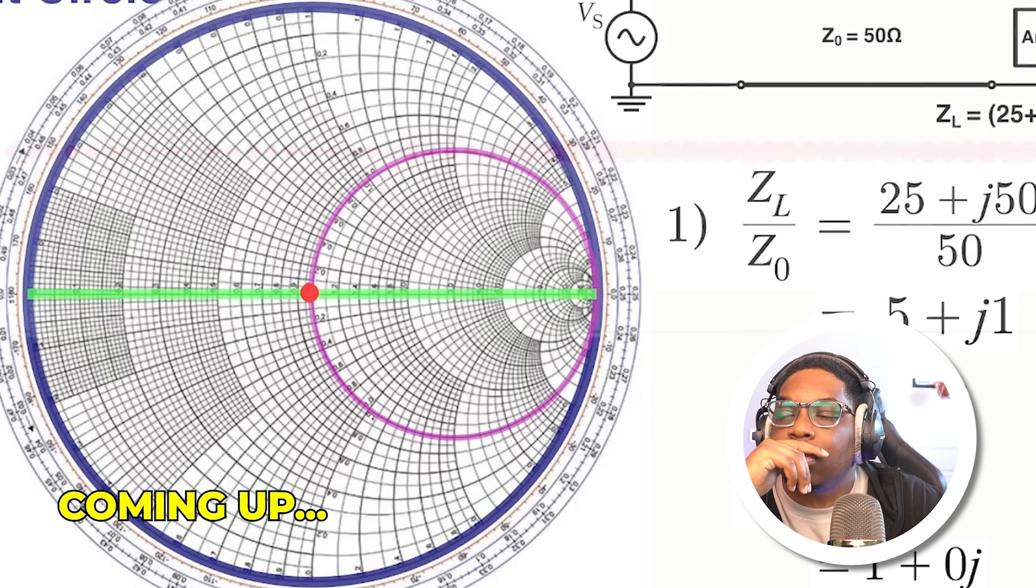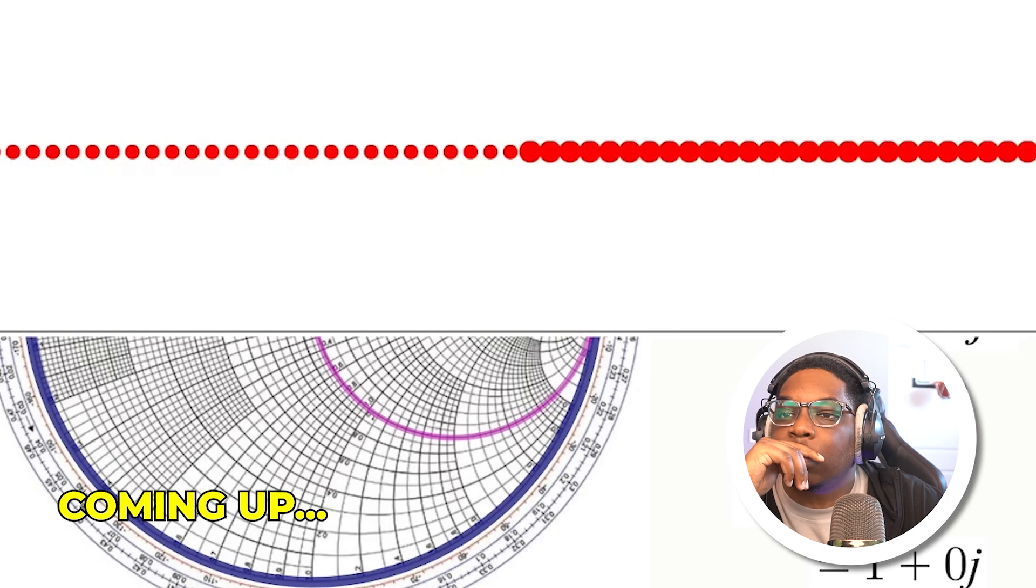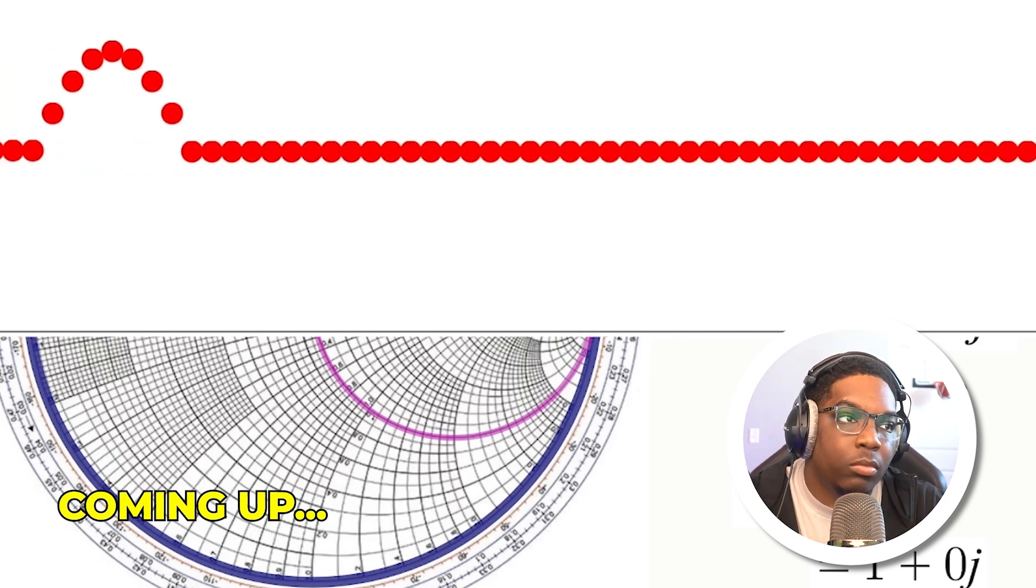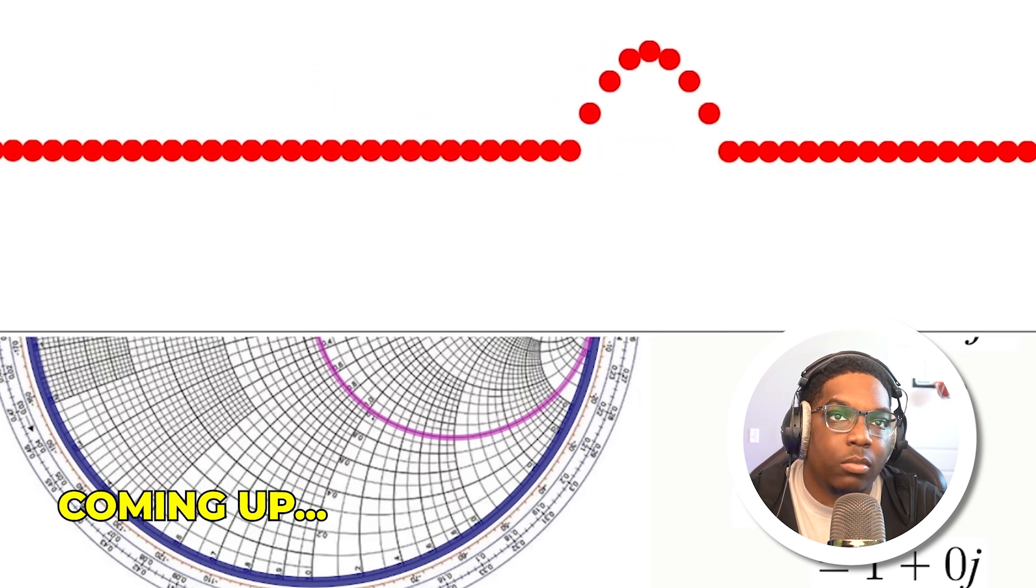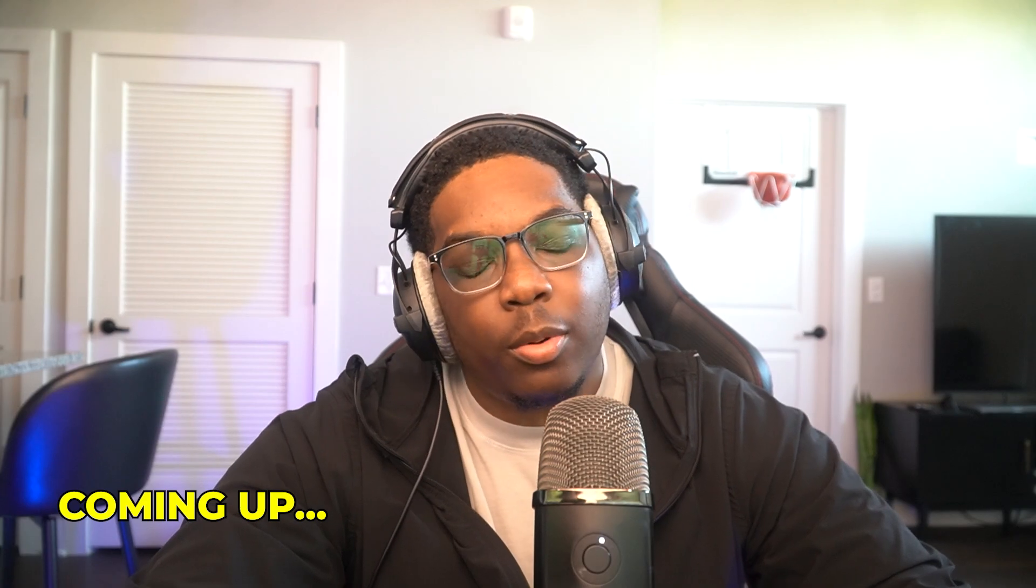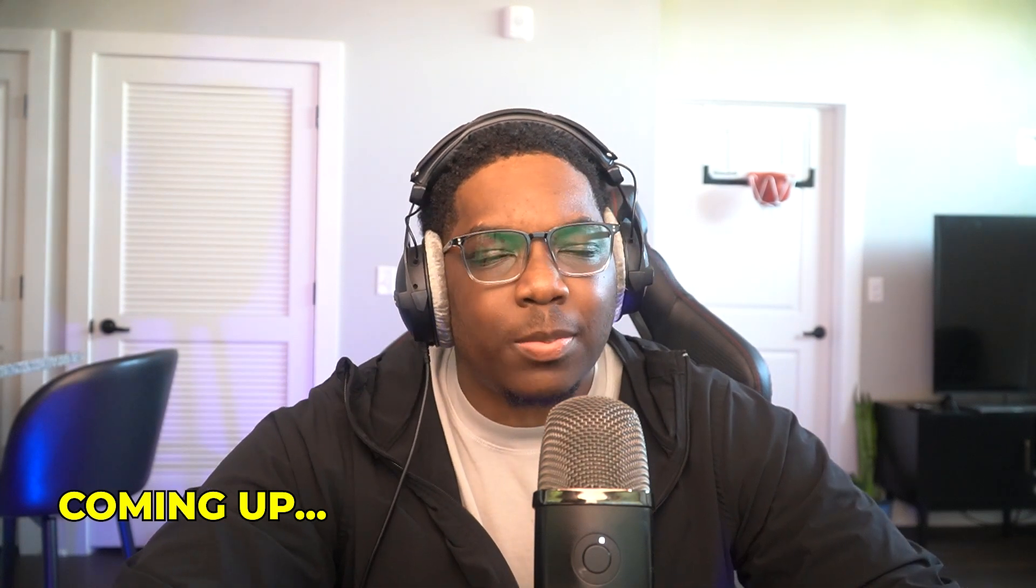This would be like, instead of before where we had different size rope, we just had a rope tied to an identical rope. Now there will be no reflection, because it's all the same rope. So we like matched impedances, or same size rope. This is extremely important because you don't want a reflective wave. You want as much signal to go through as possible.